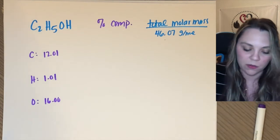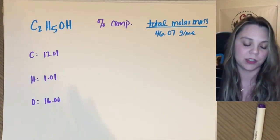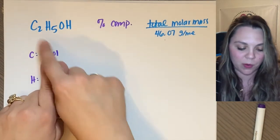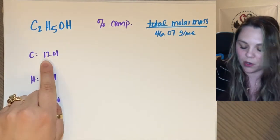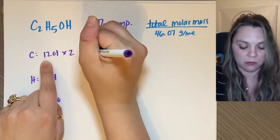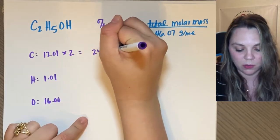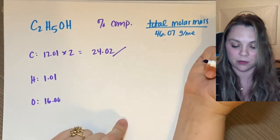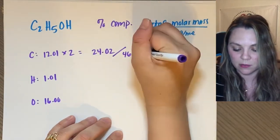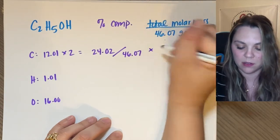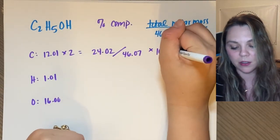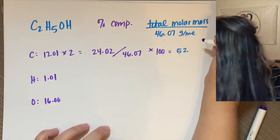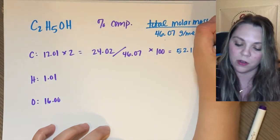Now I need to figure out for carbon, for hydrogen, for oxygen of each one of these. So for carbon, each carbon is 12.01. I have two carbons. I'm going to say 12.01 times two equals 24.02. This amount divided by my total, 46.07, and then since it's a percent, I'm going to multiply by 100. And I would get that this is 52.14 percent carbon.